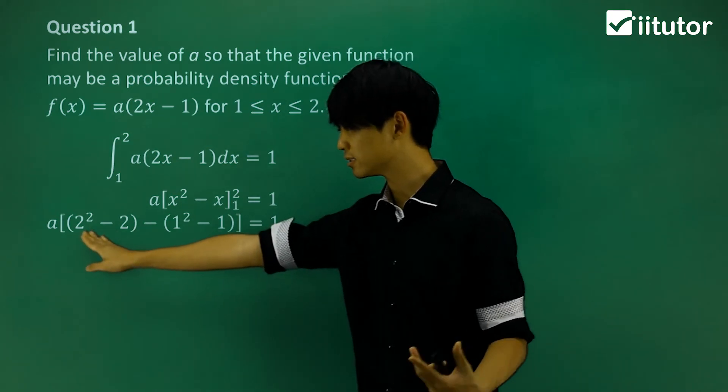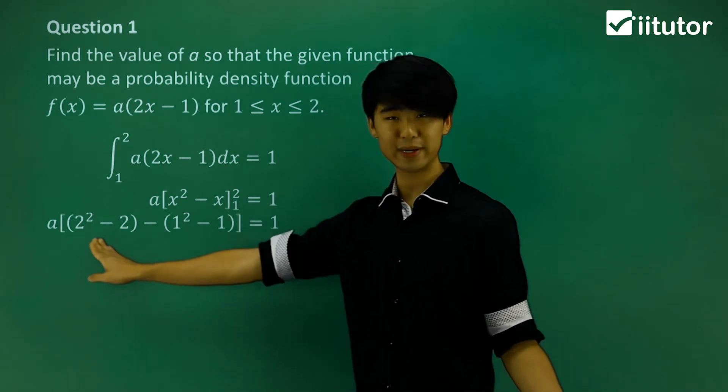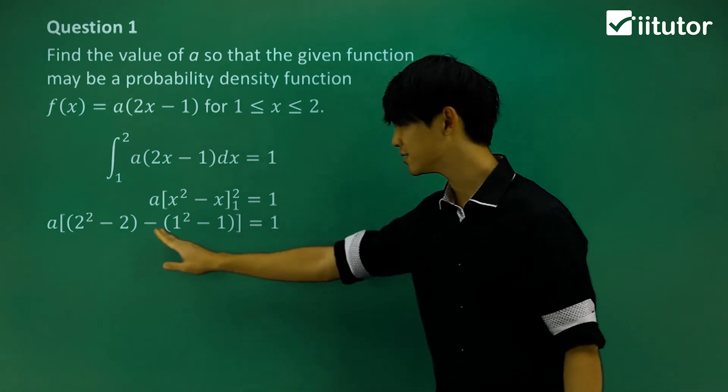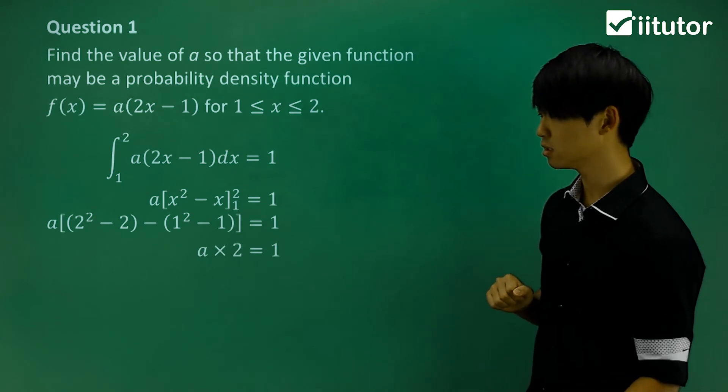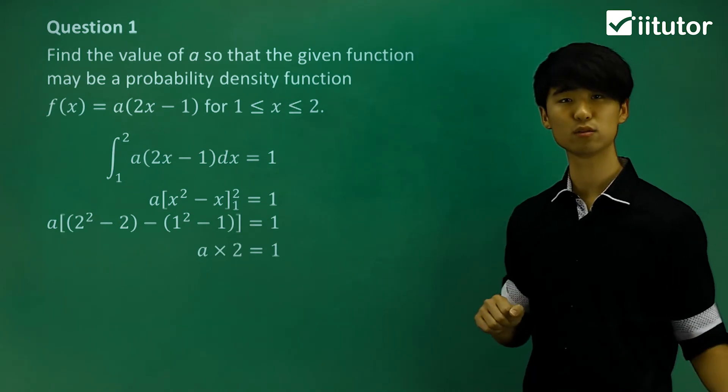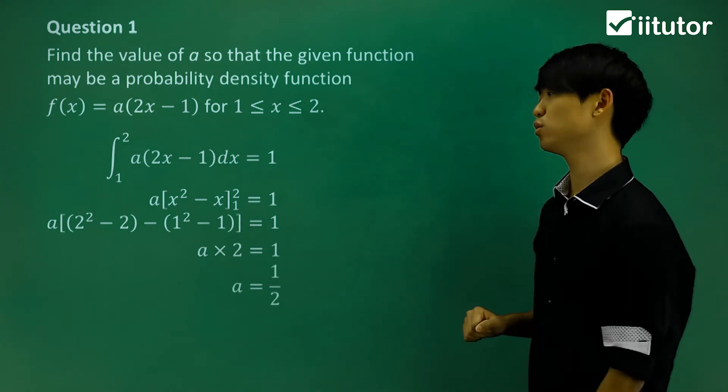So 2 squared minus 2 is 4 minus 2, which is 2, minus 1 squared minus 1, which is 0. So my left hand side is simply just a times 2 is equal to 1. Which tells me a is equal to a half.